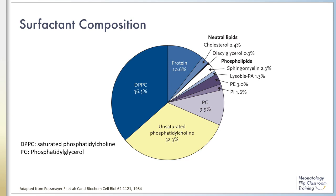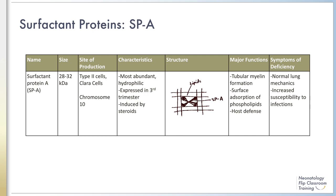Approximately 10% of surfactant is composed of surfactant proteins. There are four types of surfactant proteins — A, B, C, and D — that are essential for respiratory function, and these will be discussed on the following slides.